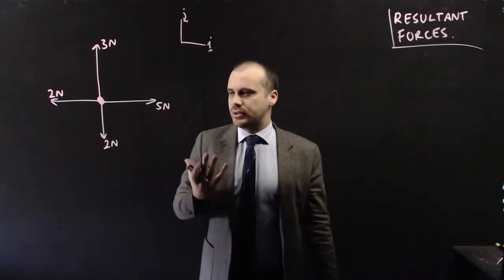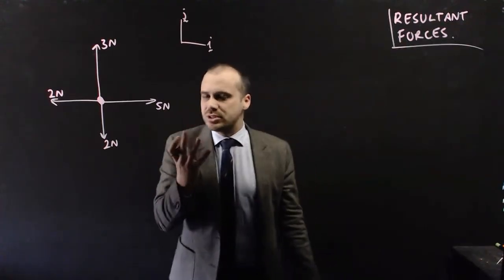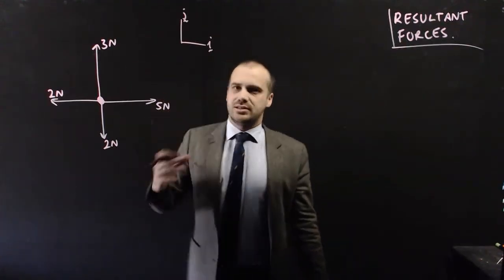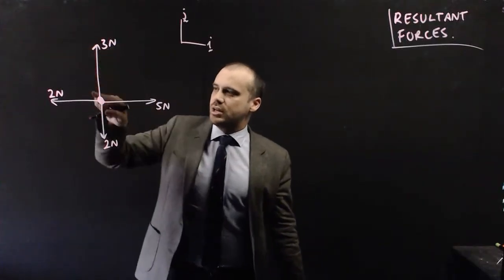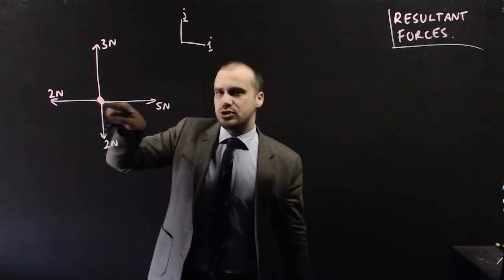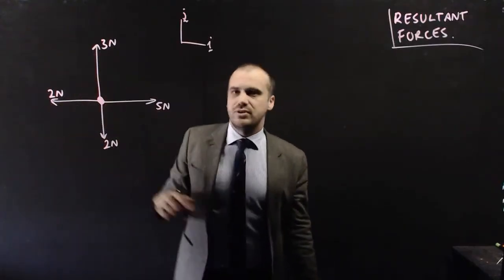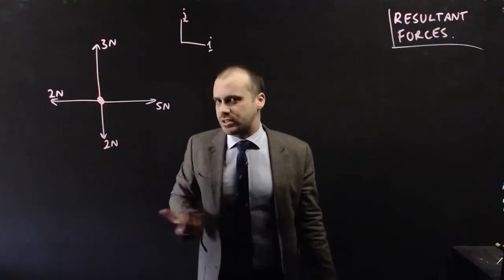Now, what's going to happen? Well, if we want a resultant, we just need to add the vectors together. So we have a vector here of 5i, a vector here of 3j, a vector here of negative 2i, and a vector here of negative 2j. So that's going to be our resultant vector.